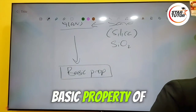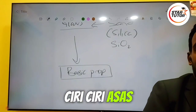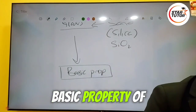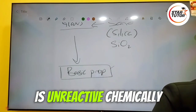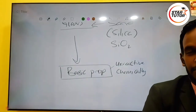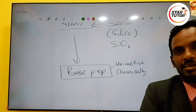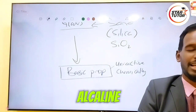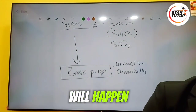The basic properties of glass. The basic properties of glass is — it is unreactive. Unreactive chemically. You take acid, you pour on the glass, nothing will happen. You take alkaline, strong alkaline, pour on the glass, nothing will happen.